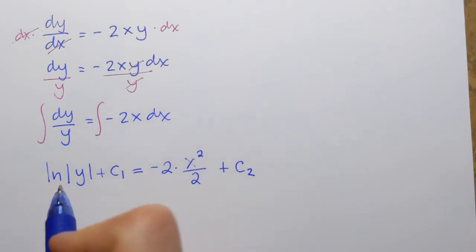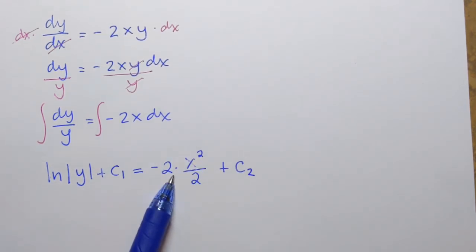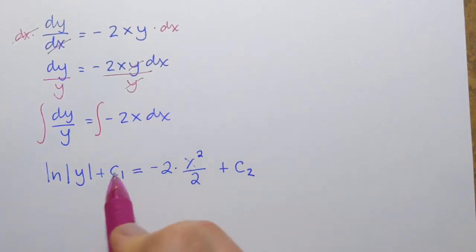Now, what I'll do next is I'll simplify this expression on the right hand side. And at the same time, what I will do, I will combine constants. So, in my mind, I will take c1, subtract it from both sides.